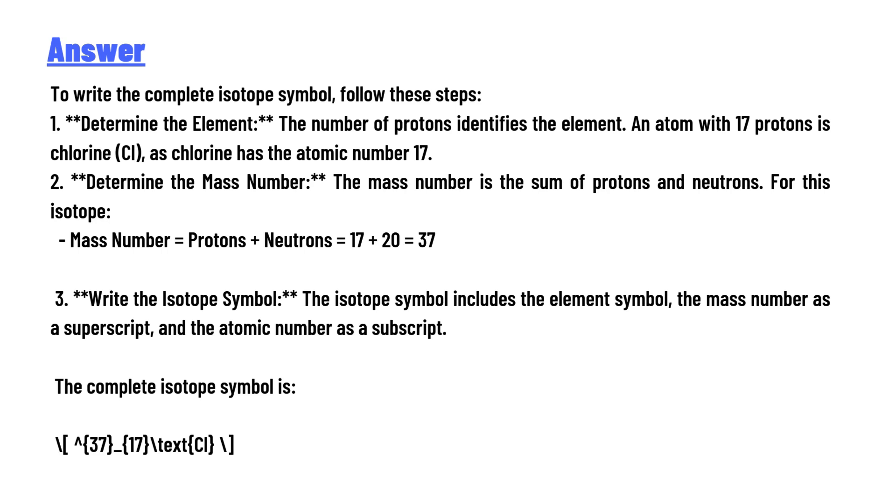Three, write the isotope symbol. The isotope symbol includes the element symbol, the mass number as a superscript, and the atomic number as a subscript. The complete isotope symbol is: 37 superscript, 17 subscript, Cl.